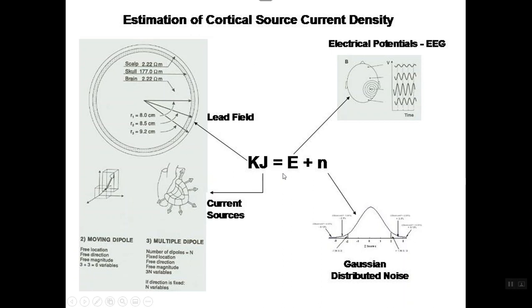Then you solve this inverse solution. You weight those dipoles that have the greatest contribution to the electricity at the scalp surface. The way you do that is you move the lead field K underneath E. So now the current sources J are equal to E, which is the electrical potential, two-dimensional electrical potential on the scalp surface, divided by the three-dimensional lead field.